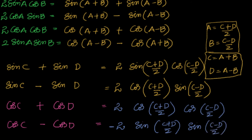We have done this because whenever you are adding trigonometric terms, they will appear as some angle x added to or subtracted from another angle, and you should be able to handle that. From here, we clearly see that if C and D are the angles, then A equals (C+D)/2.